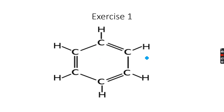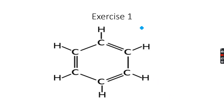Now here we have the benzene ring. When you look at this molecule, you see six hydrogen atoms, all attached to different carbon atoms — one hydrogen attached to one carbon each. So how many peaks do you think this will contribute to?